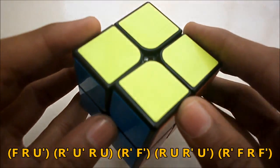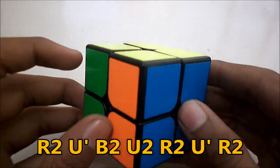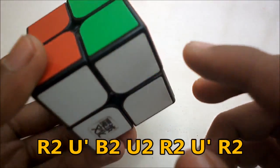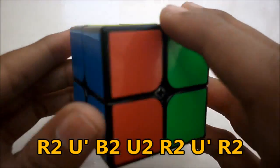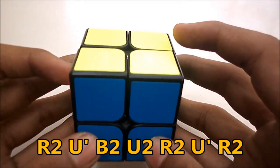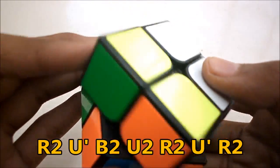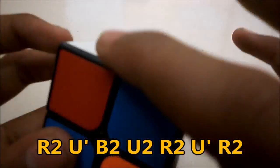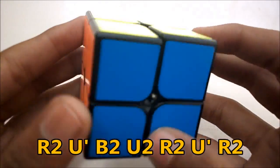And that solves it. So the next case is when you have an adjacent swap on the bottom as well as on the top. So you hold both of the bars in front of you and perform the algorithm R2 U' B2 U2 R2 U' R2 and that solves it.